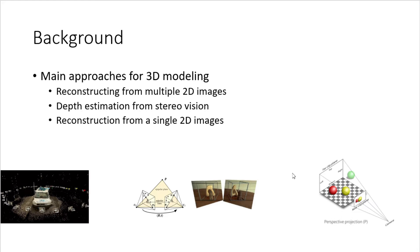The second approach is to use stereoscopic cameras — cameras with two lenses. Based on the discrepancy between the two images from the two lenses and the distance between them, we can reconstruct the depth information of the objects. The third and most difficult approach is when we are given a single image showing an object, called a perspective projection.